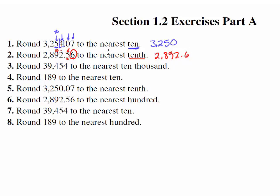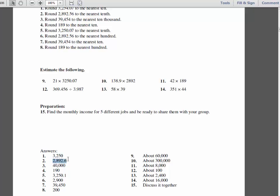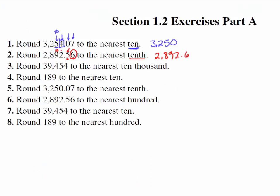And you could put a 0 there if you wanted, but .6. And that's really what we've done is 2,892.56 is right between .5 and .6, but since this 6 is larger than a 5, it rounds it up. Let's double check our answer. Oh, there we are, 2,892.6. Number 3,